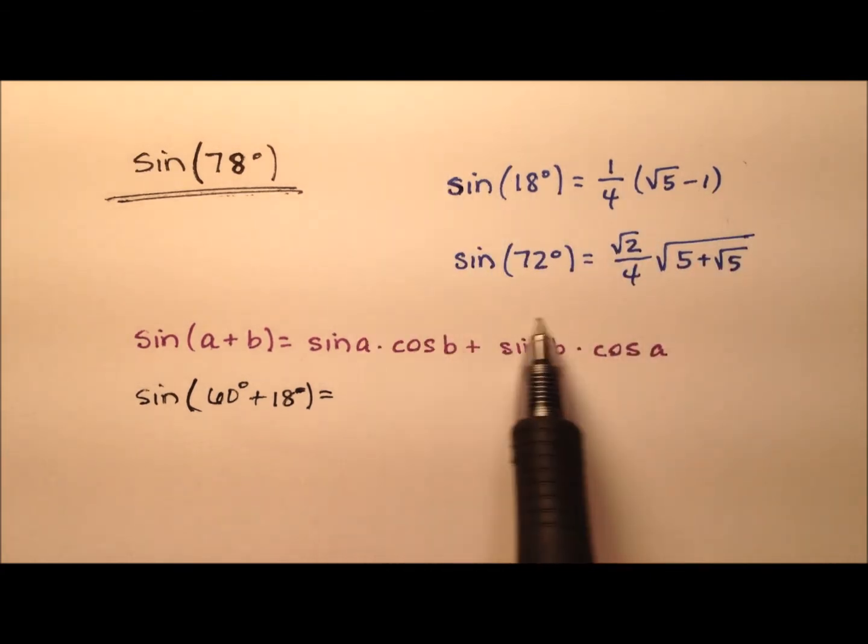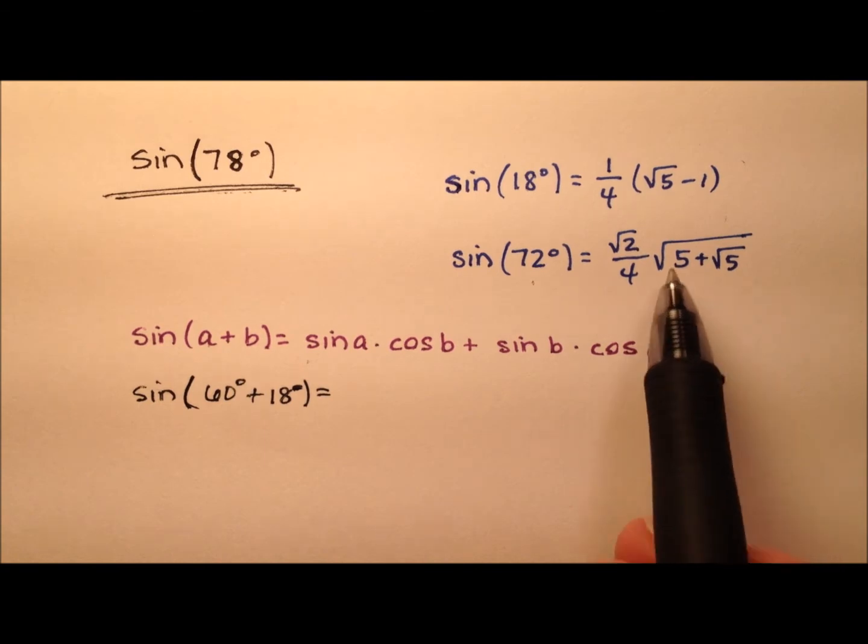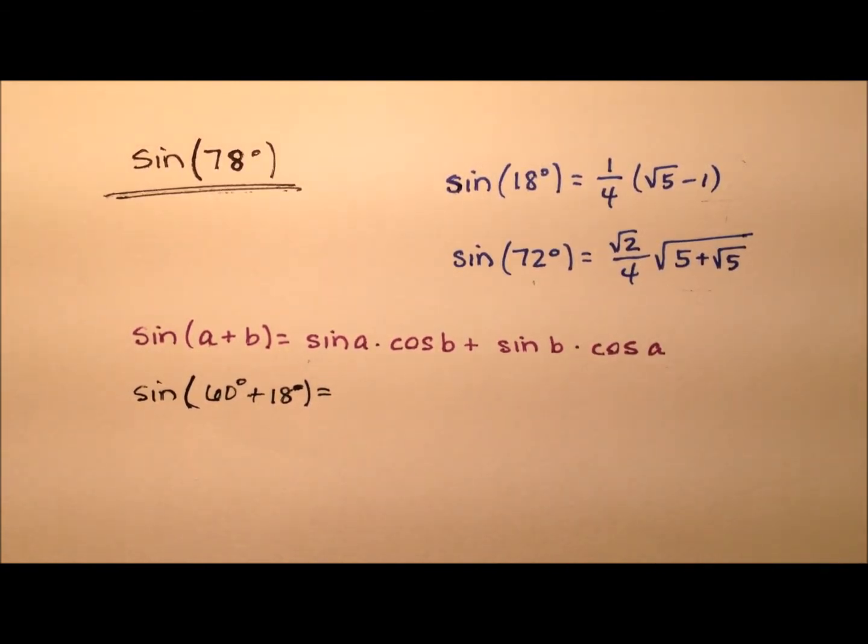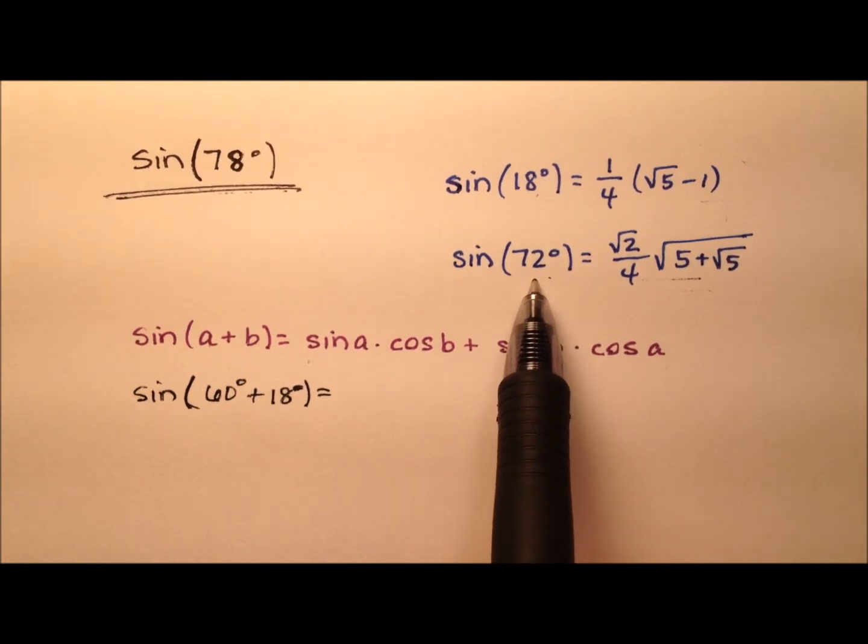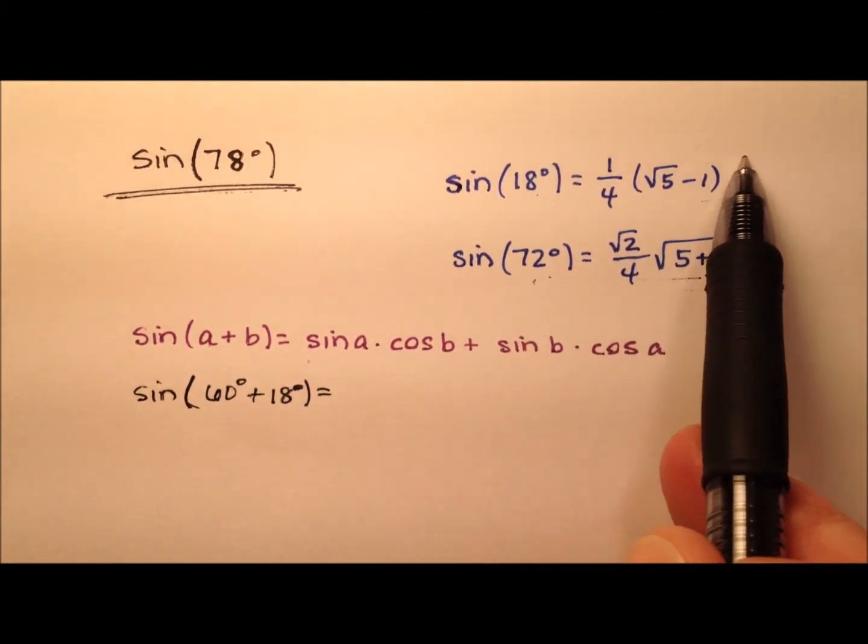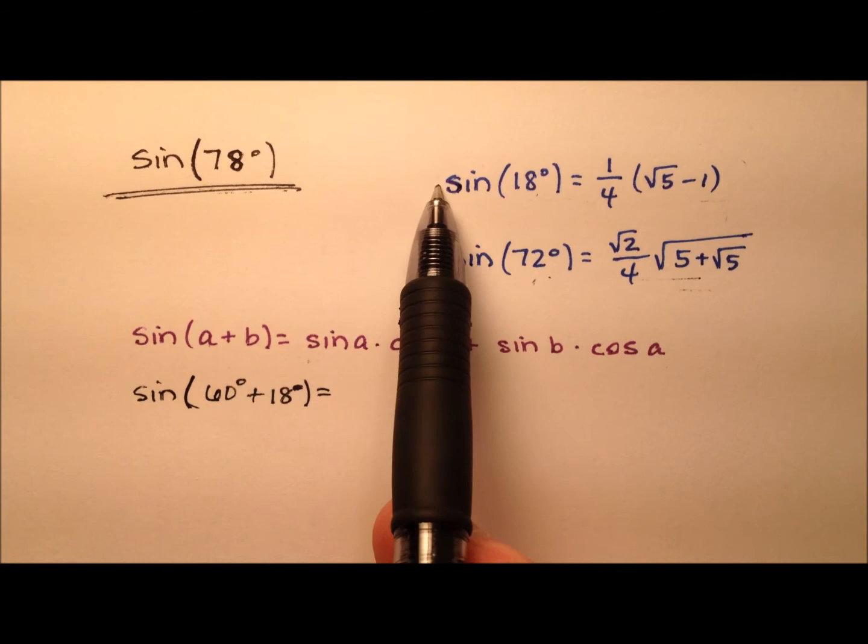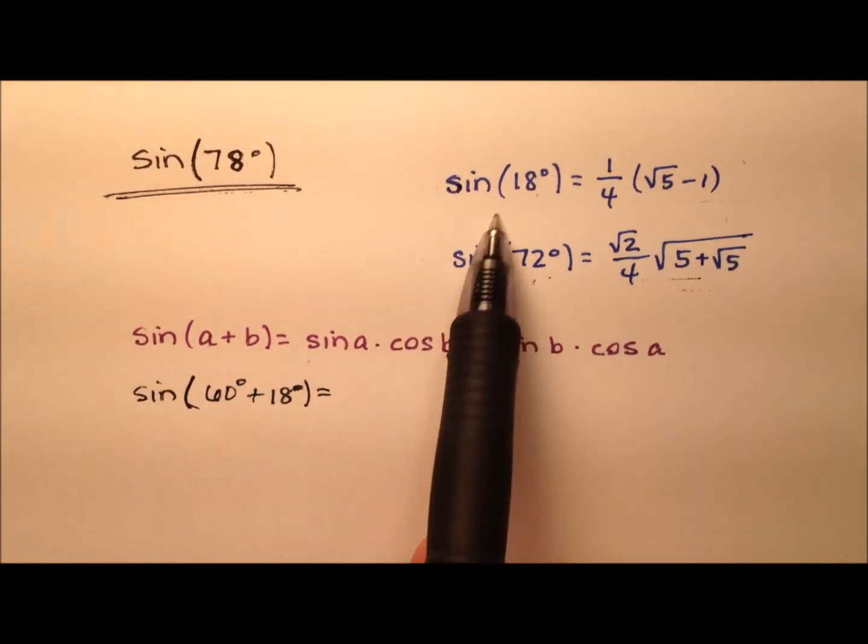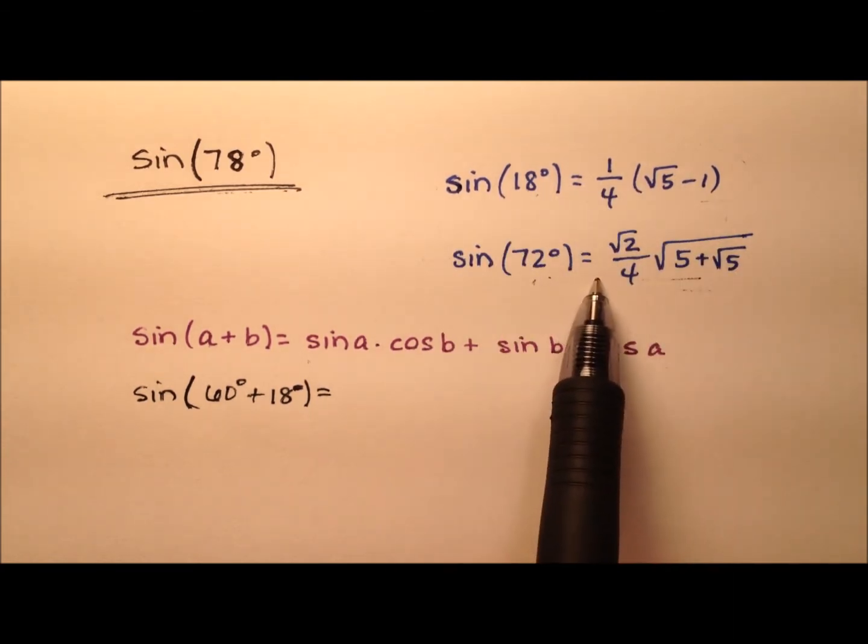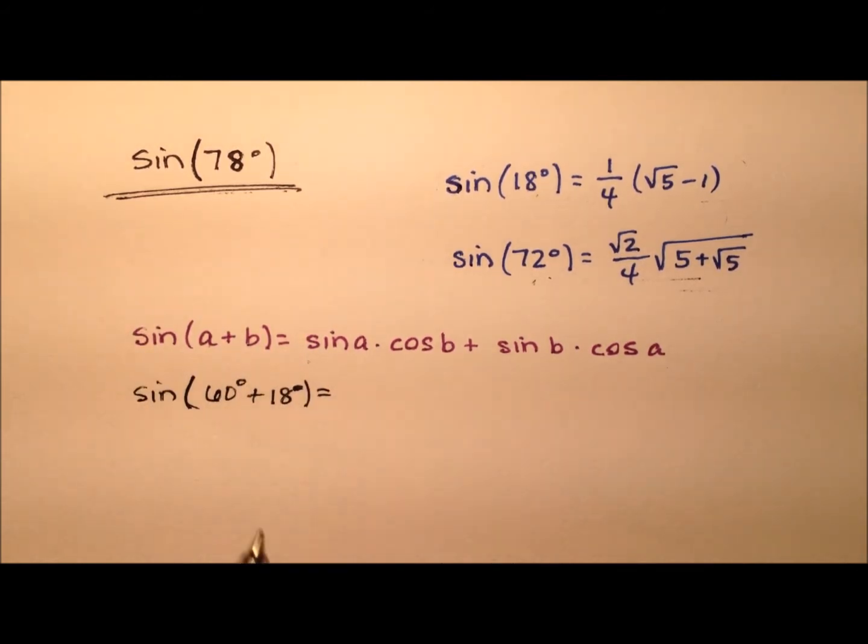You'll notice up here in blue, I have a couple of values of sine that we're going to employ in this process. These two values of sine have been previously found from scratch in other videos. Those links to these two videos in particular are down below in the description, so you can find how I went about finding the exact values for these. I will say that these two videos are probably more interesting than this one, because they derive the values from scratch using polynomial equations and roots, while the sine of 78 degrees is just going to employ this sum identity.